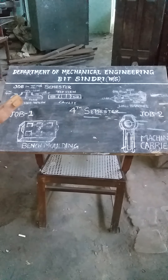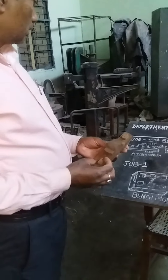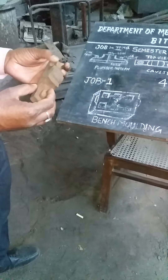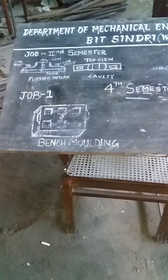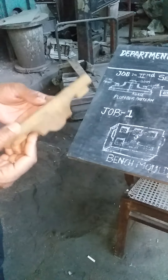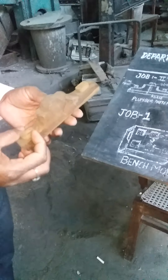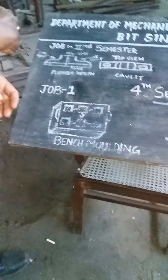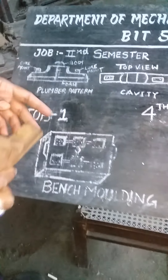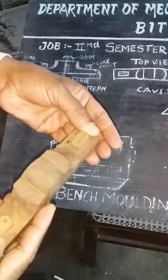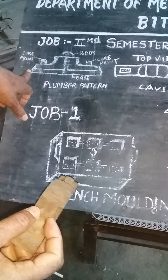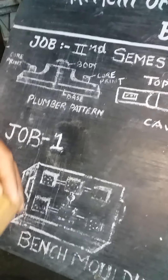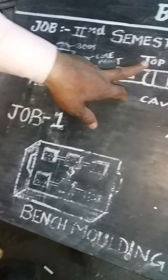Now this is the pattern with which we are making the mould. This is for the second semester. This pattern is called the plumber pattern. Basically this pattern is made in the carpentry shop and with the help of this pattern we make the mould. Now this is the core print — this is the body, and these two projections are called the core print. You can see the top view here.